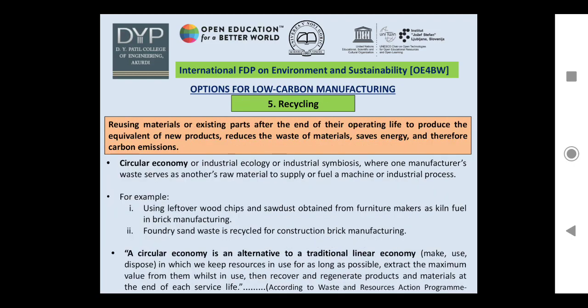The fifth option for low carbon manufacturing is recycling — reusing materials or existing parts after the end of their operating life to produce the equivalent of new products. This reduces waste of materials, saves energy, and therefore reduces carbon emissions. A major highlighting aspect of the recycling strategy is circular economy, industrial ecology, or industrial symbiosis, where one manufacturer's waste serves as another's raw material. For example, in the furniture industry, leftover wood chips and sawdust are used as kiln fuel for brick manufacturing, and foundry sand waste is recycled for construction brick manufacturing.